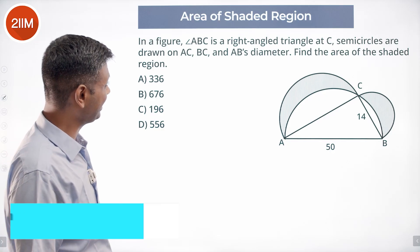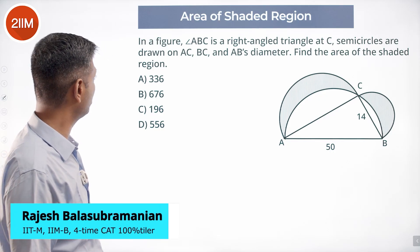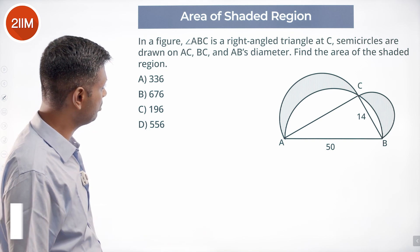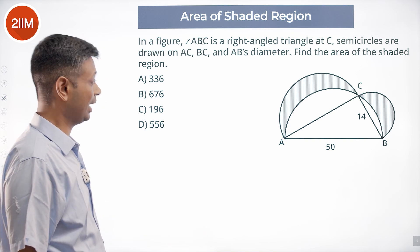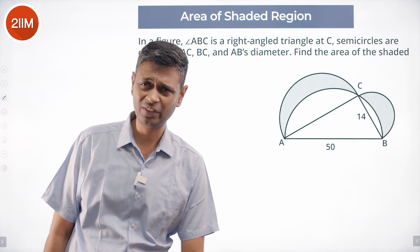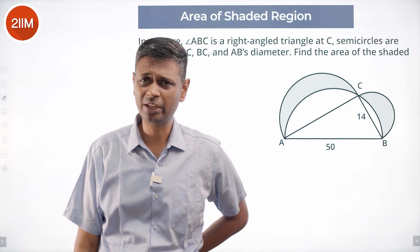In a figure, triangle ABC is right-angled at C. Semicircles are drawn on AC, BC, and AB's diameter. Find the area of the shaded region. Lovely question, but a standard template. Some of you might have seen this.